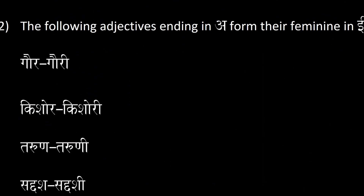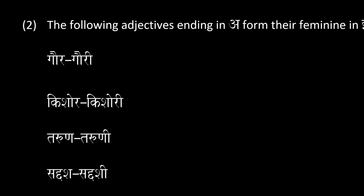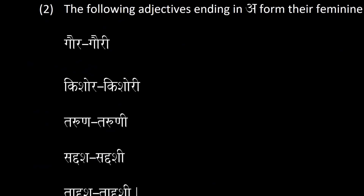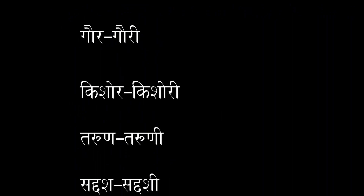The next condition is that the following adjectives ending in 'a' can form their feminine in long 'ī'. For example, gorā is an adjective to describe a masculine noun that is white, but if you would like to describe a feminine noun as the color white, you add the long 'ī' to the end, so gorā becomes gorī.